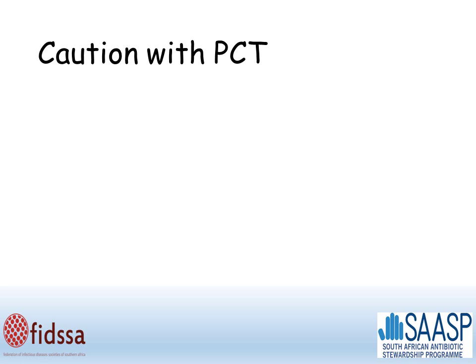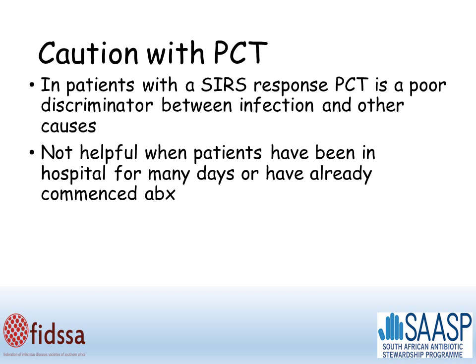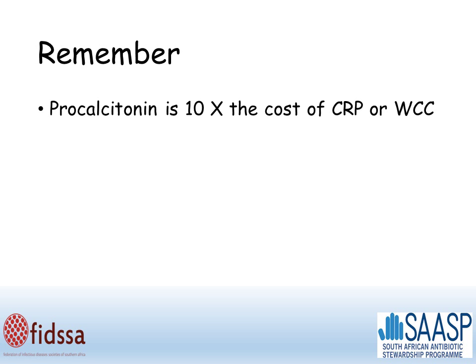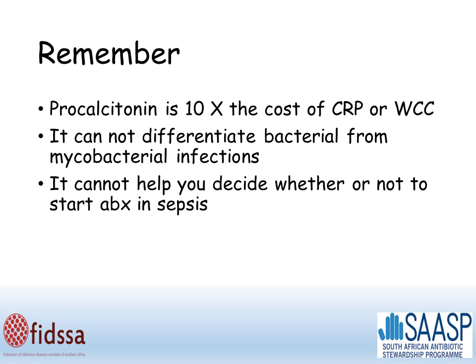There are some cautions with the use of PCT. In patients with a SIRS response, PCT is a poor discriminator between infections and other causes, and it's not helpful when patients have been in hospital for many days and have already been commenced on antibiotics. It's really most helpful when a patient is first seen and in outpatient settings. Remember, procalcitonin is 10 times the cost of CRP or white cell count, and it can't help you differentiate between bacterial and mycobacterial infections — for example, it can't tell you the difference between pneumonia and pulmonary tuberculosis. It also cannot help you decide whether or not to start antibiotics in patients with sepsis, where it's a poor discriminator.